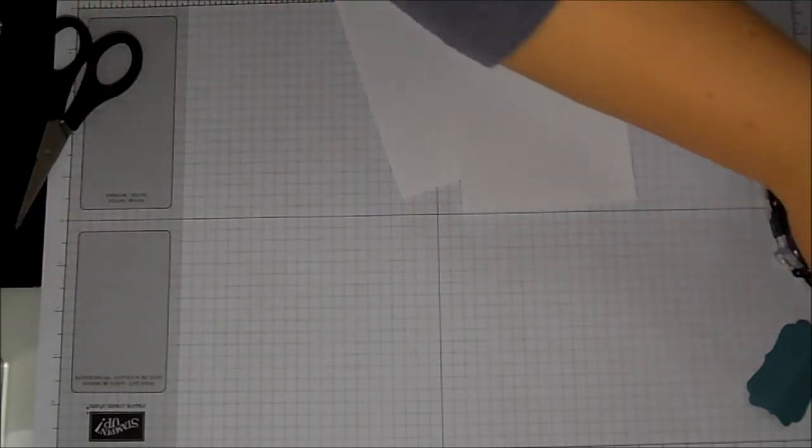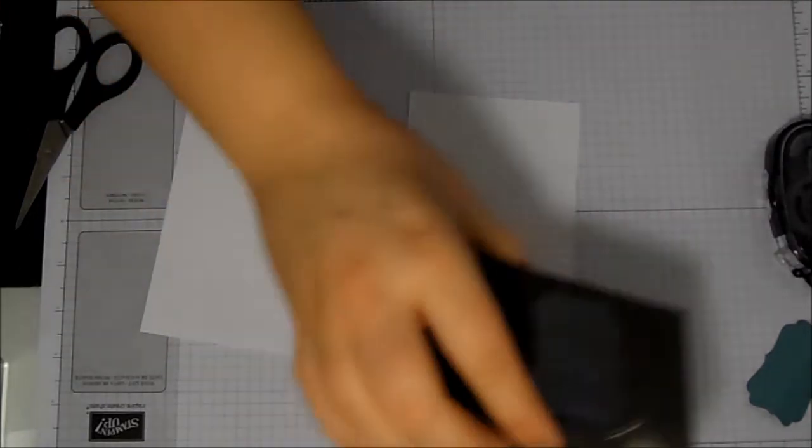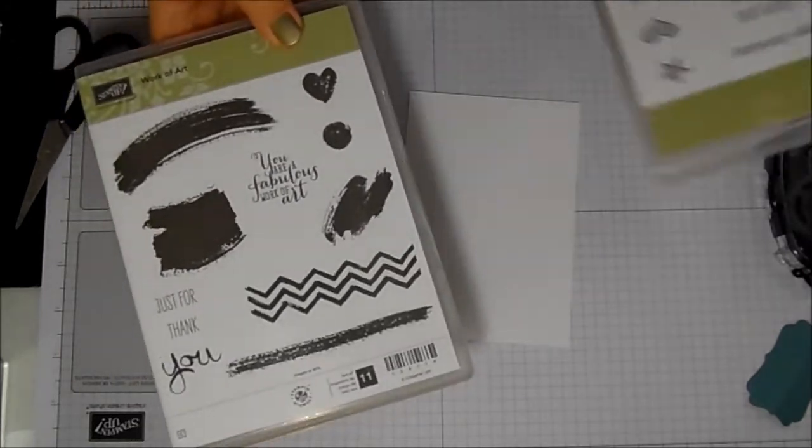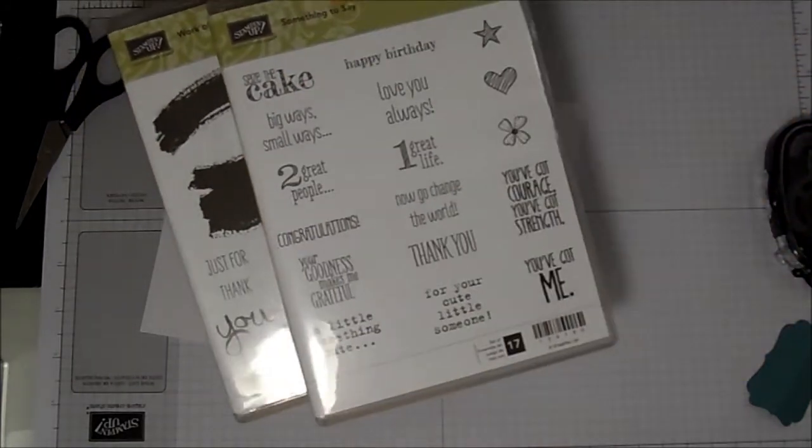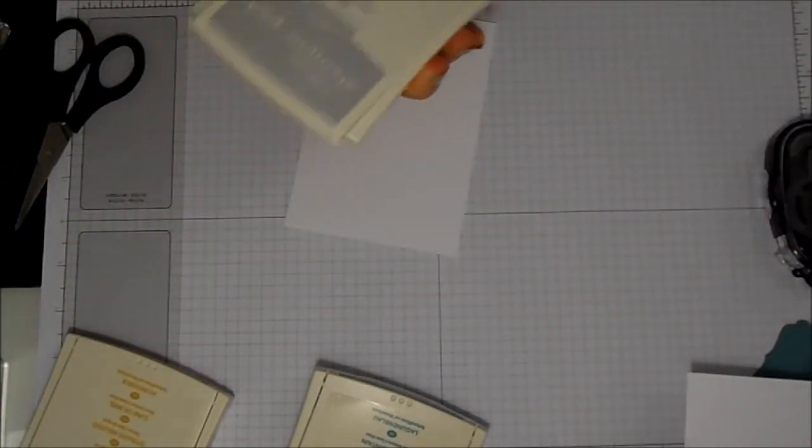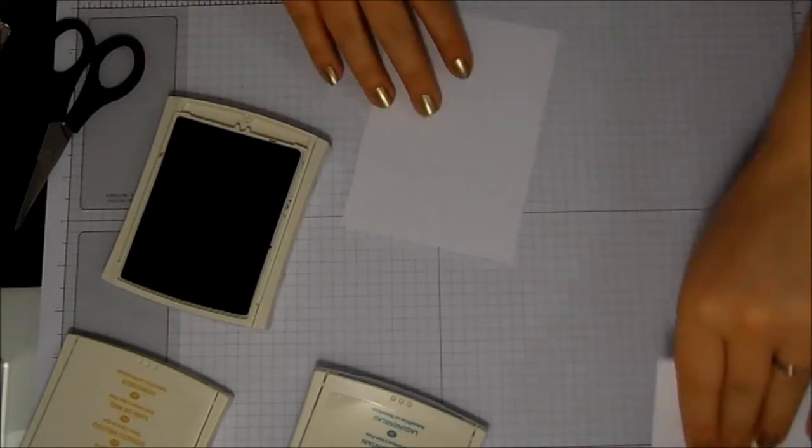So a little bit of stamping—let's move this punch out of the way. I've got two stamp sets today. I've got Work of Art and I've got Something to Say, just because I wanted a sentiment. There are sentiments in this, but I wanted a happy birthday.